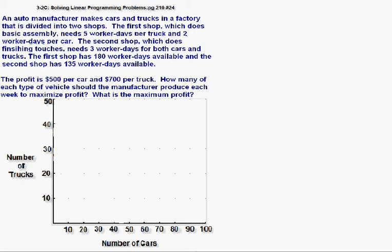An auto manufacturer makes cars and trucks in a factory that is divided into two shops. The first shop, which does basic assembly, needs five worker days per truck and two worker days per car.